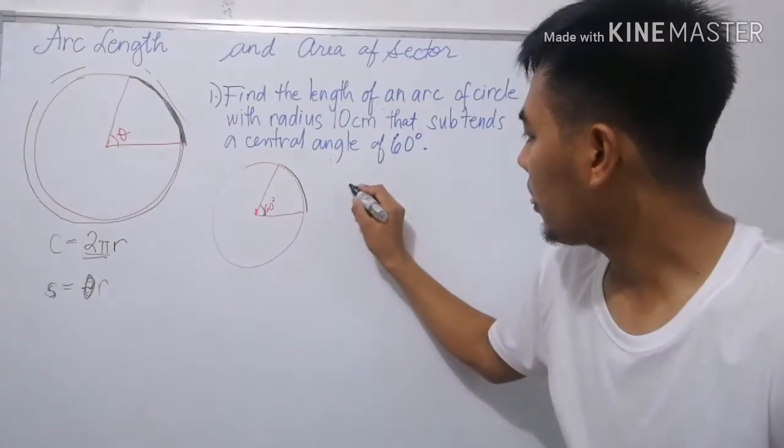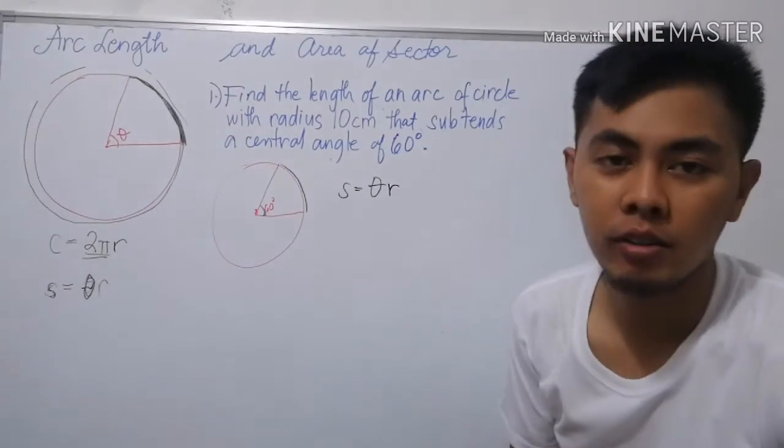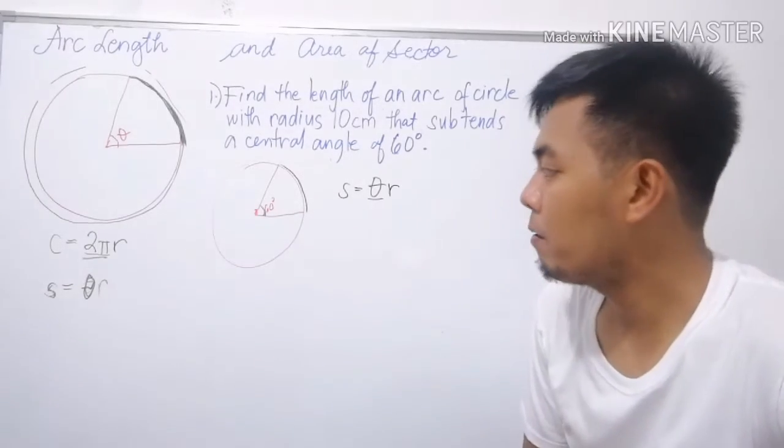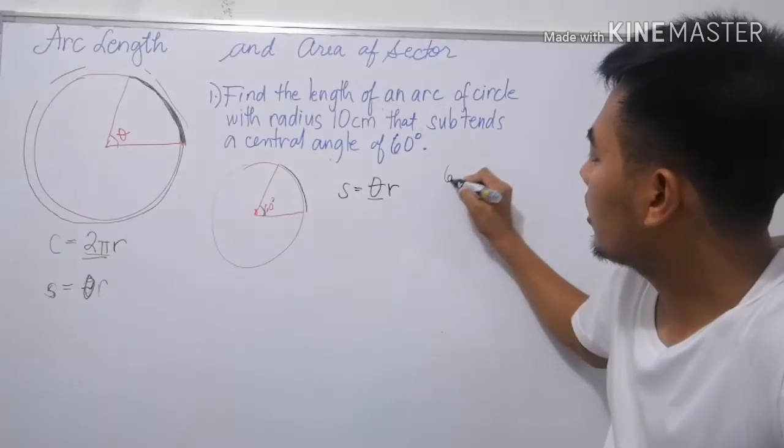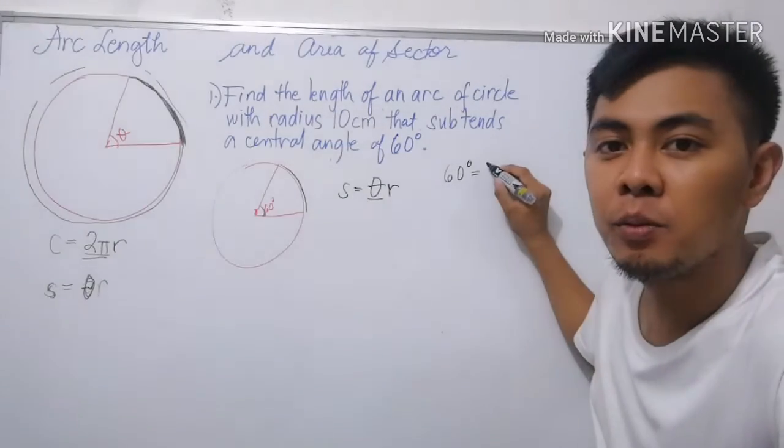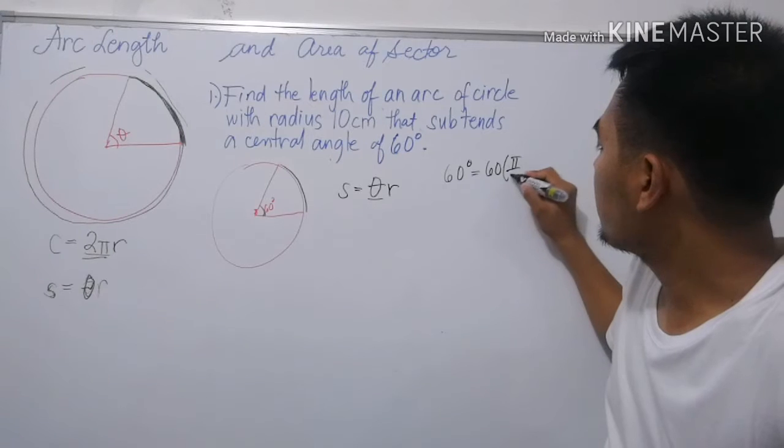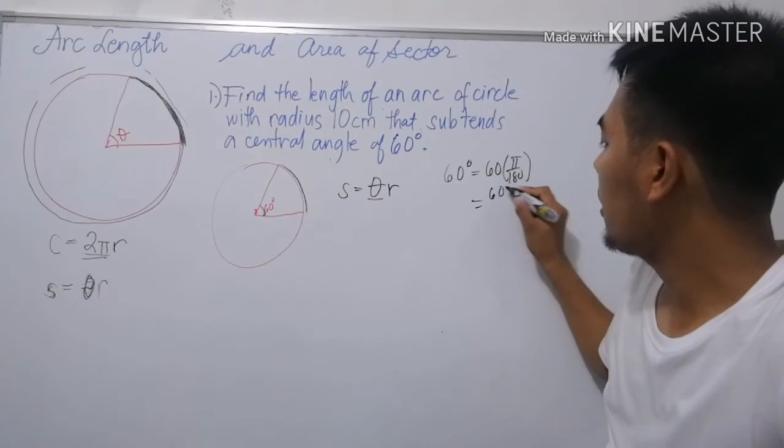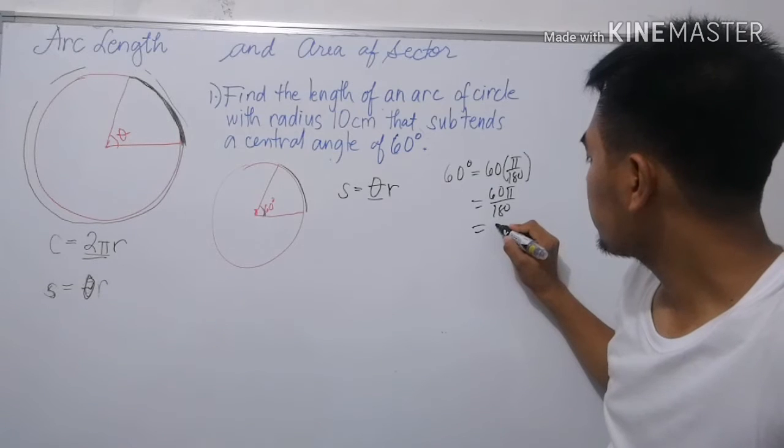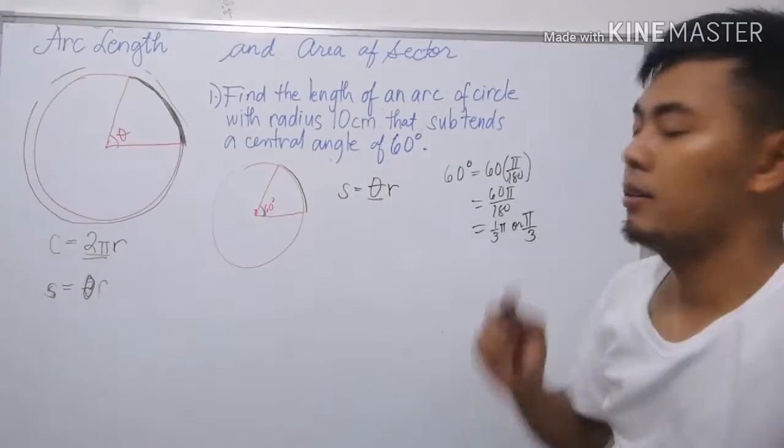We're going to use the formula S equals θR. But take note, as what we said, the angle should be in radians. If the theta is 60 degrees, convert into radians. 60 times π over 180 equals π over 3.